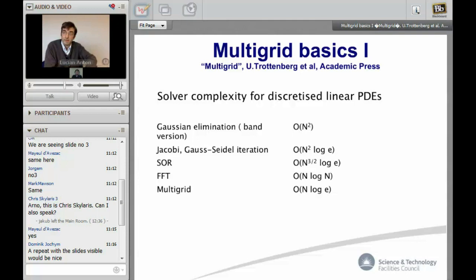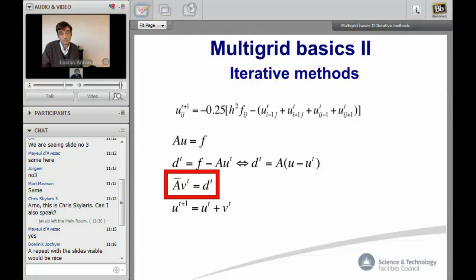The problem is with direct methods like Gaussian elimination for sparse matrices, it scales with n squared where n is the number of grid points. Simple iterative methods like Jacobi, Gauss-Seidel, SOR successive over-relaxation scales a bit better but it's not good enough when you think at the size that you want to work. Fast Fourier transform has good scaling but it works only in homogeneous cases and needs special boundary conditions. So multigrid which has also order n scaling is the solver we need to implement for this problem.